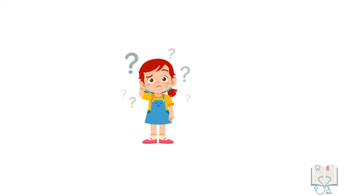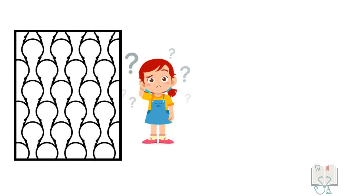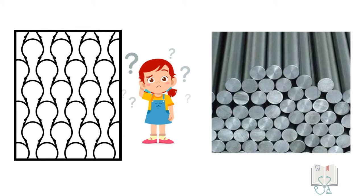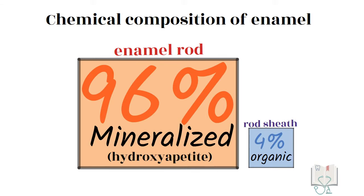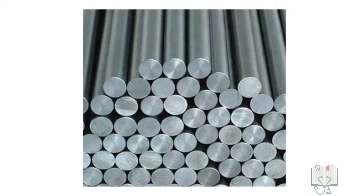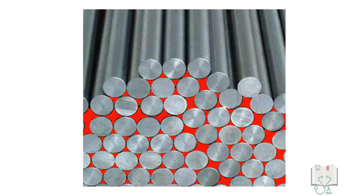Now, why the enamel rods have a complicated keyhole shape and why not a simple cylindrical shape? The answer lies in the percentage of mineralization in enamel. If the rods are cylindrical in shape, a lot of space is left in between which is filled with organic matter that would occupy more than 4% of enamel.